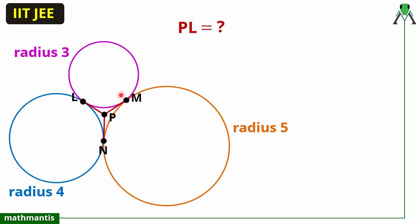In the question we have been given three circles of radii 3, 4, and 5, and these three circles are touching each other externally pairwise. These two circles are touching at point M, these two circles are touching at point N, and these two circles are touching at point L. At each point of contact, three common tangents have been drawn, and these three common tangents intersect each other at point P.